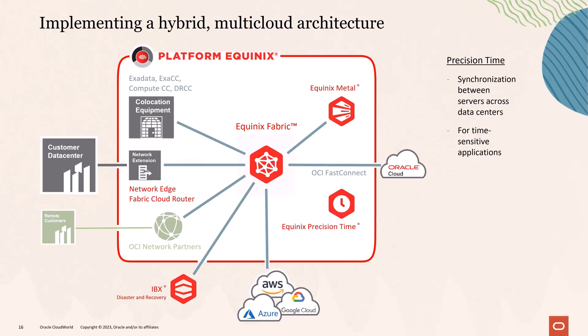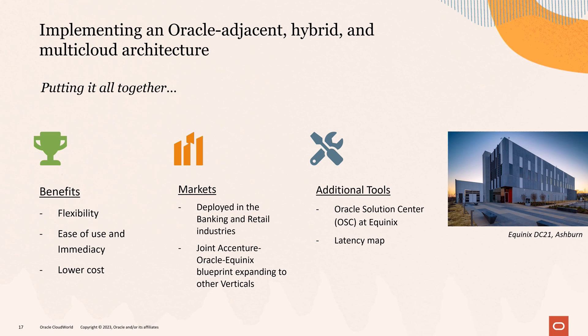Specifically for the banking industry — though it could expand to other markets — we propose Precision Time to solve the problem of synchronization between data centers. It's used extensively by the banking industry because it provides a higher level of synchronization of transactions. When we put all of this together, we solve the customer problems mentioned at the beginning: ease of use, flexibility, and lower cost. This Power of 3 solution has been designed for banking and retail, but more generally it's a blueprint established by the three companies that can be replicated easily across other verticals.